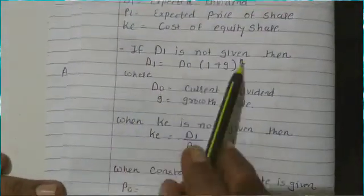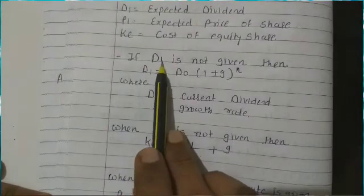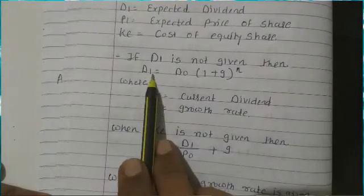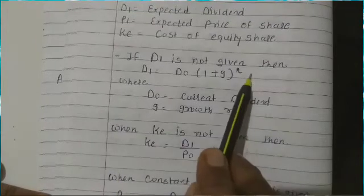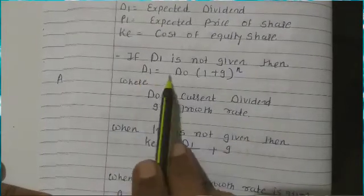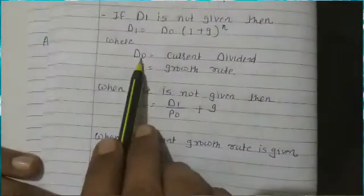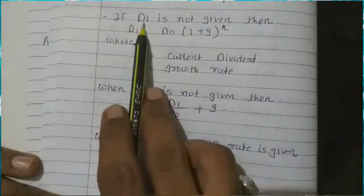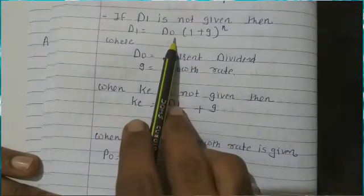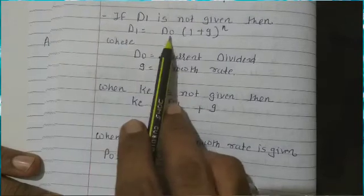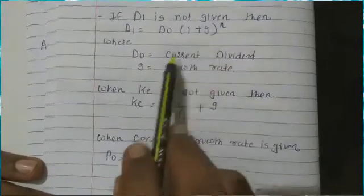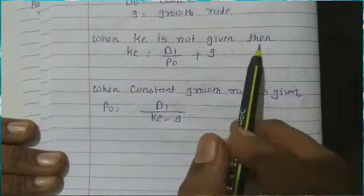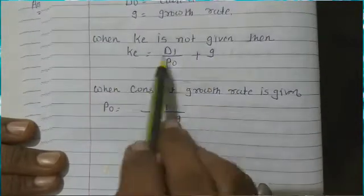Now, if D1 is not given directly — in some cases the expected dividend is not given — then the current dividend D0 is given. In that case, we use the formula: D1 = D0 × (1 + g)^n, which we have already learned. The expected dividend equals the current dividend multiplied by (1 + growth rate)^n. When expected dividend is not given and current dividend is given, we use the formula D1 / P0 + G.